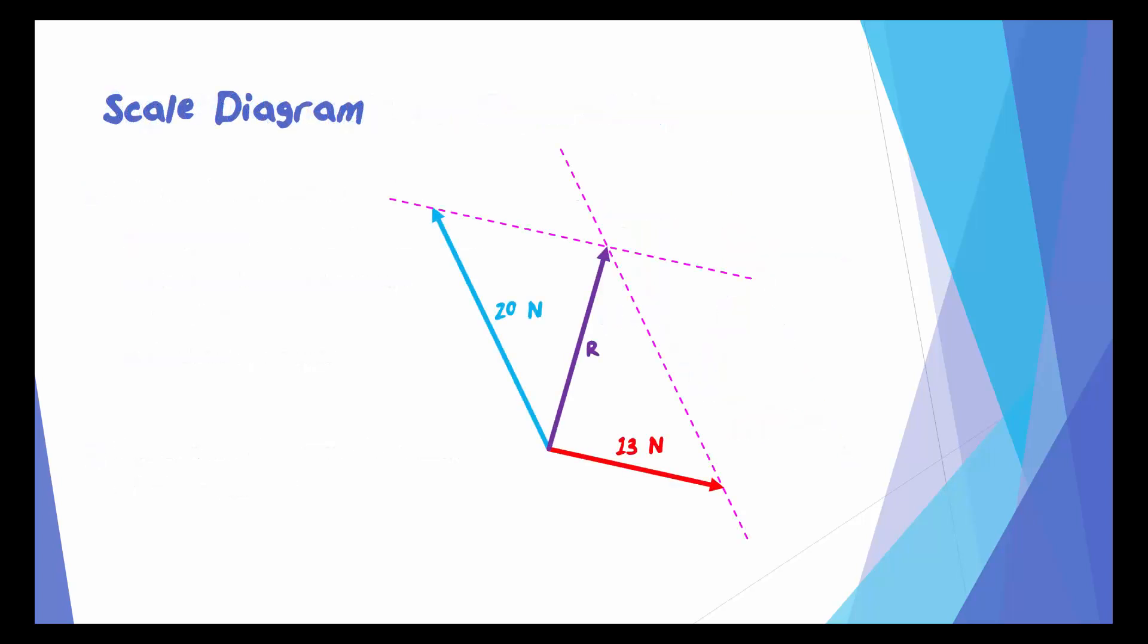Sometimes you'll be given the scale of a diagram. Other times we have to figure it out ourselves, which is what we'll do here. Let's measure the length of the 20 Newton force. It's 10 centimeters for a 20 Newton force, and we can set up a proportion. If 10 centimeters is 20 Newtons, then 1 centimeter is how many? Well, it would be 2. This means that we think our scale is 1 centimeter equals 2 Newtons.